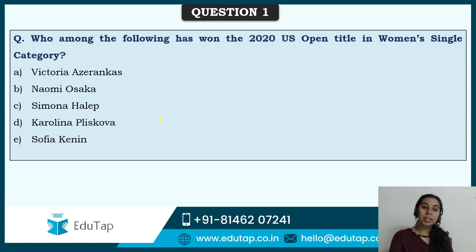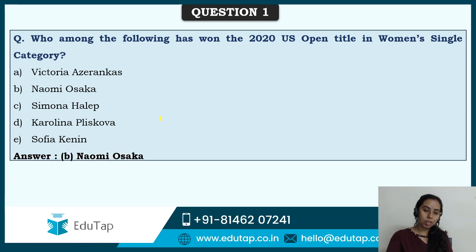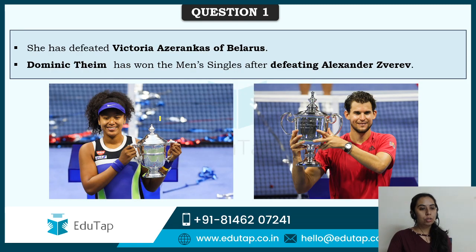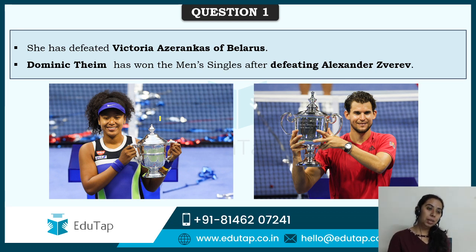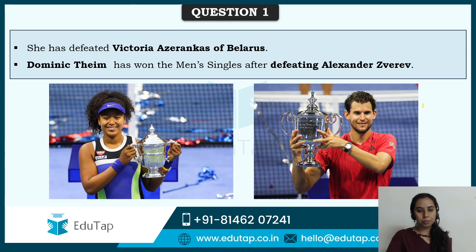First question: Who has won the 2020 US Open title in the women's singles category? Naomi Osaka won the title, defeating Victoria Azarenka who hails from Belarus. Similarly, the men's singles title has been won by Dominic Thiem, defeating Alexander Zverev. You have to know who won in which category and whom they defeated — that is also important.